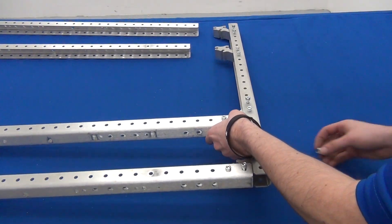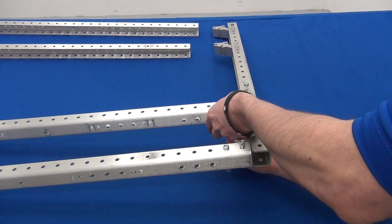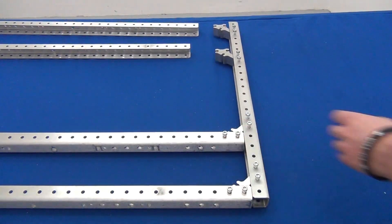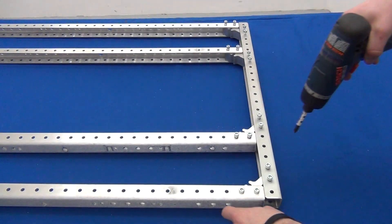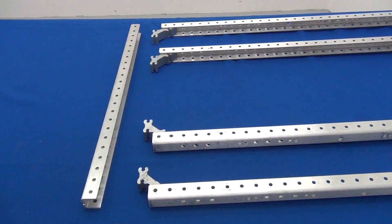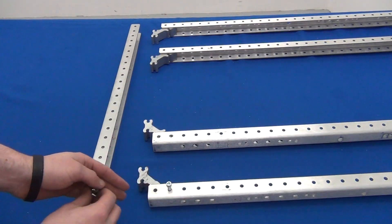Add corner connects to the 23-inch piece. The outer corner connects will be flush with the end of the C channel. The inner corner connects are three holes away from the outer corner connect. Attach corner connects on the other end in the same manner.